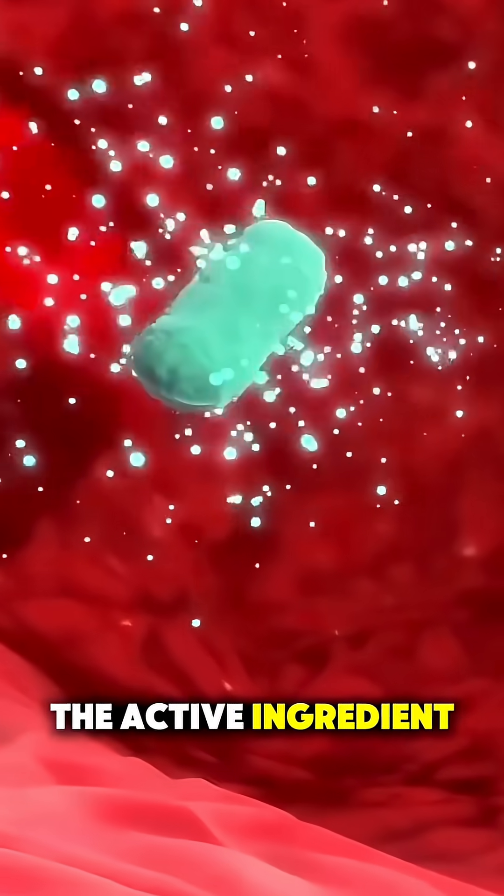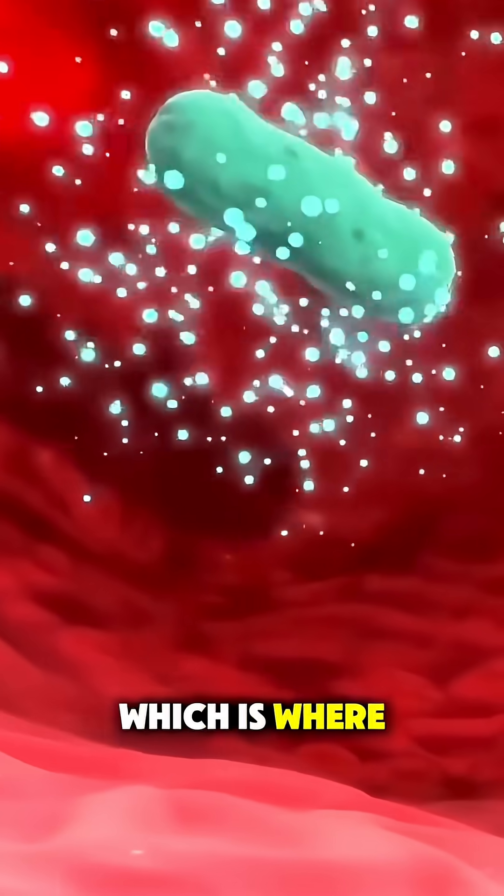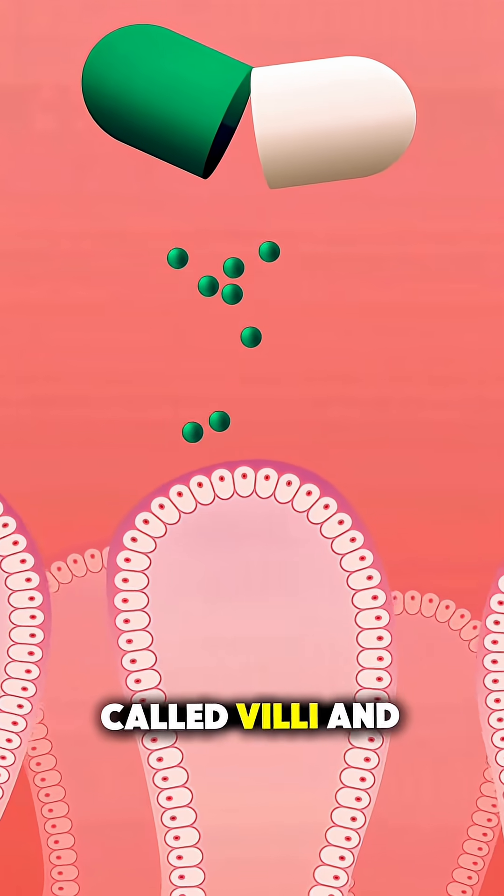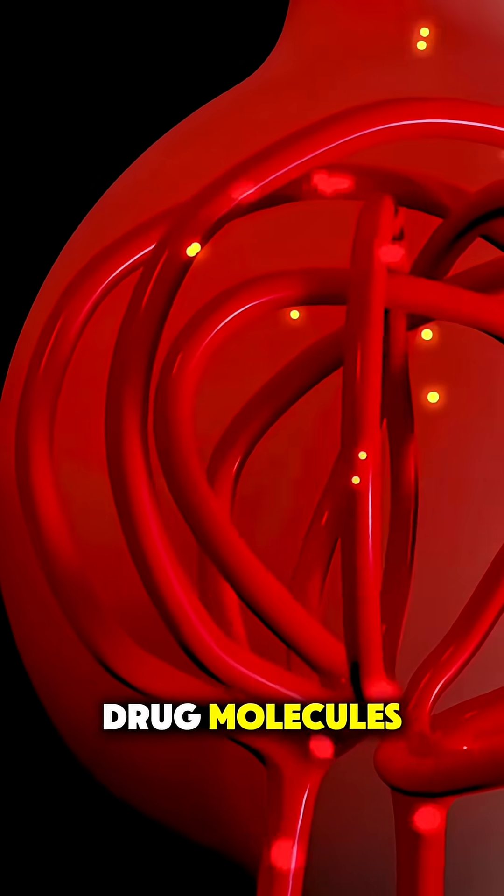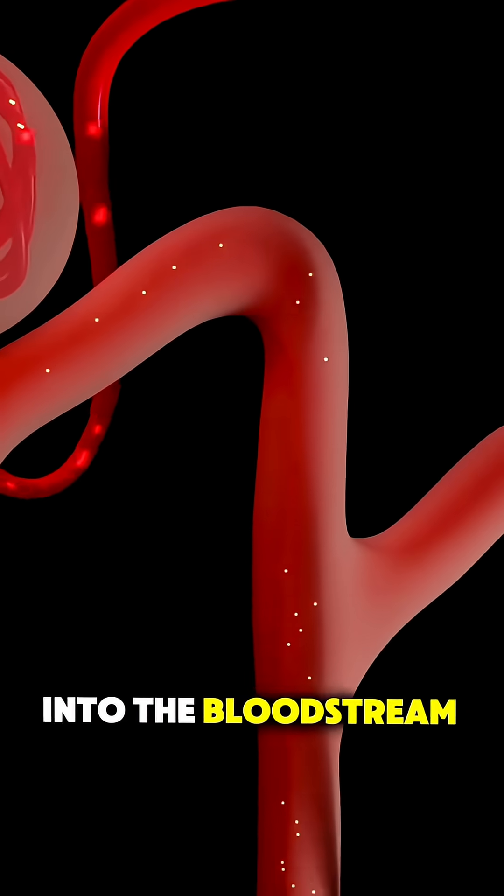Next, the active ingredient is released and moves into the small intestine, which is where most absorption happens. Tiny finger-like projections called villi and microvilli in the intestine grab onto the drug molecules and help them pass through the intestinal wall into the bloodstream.